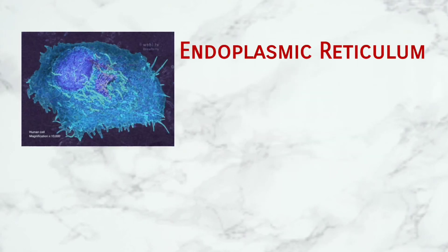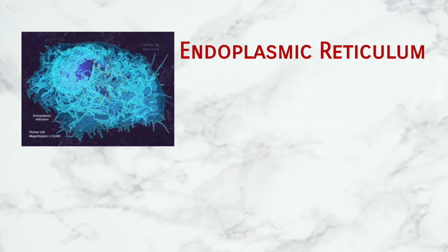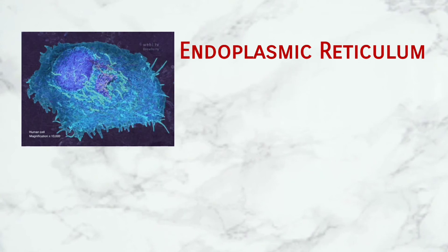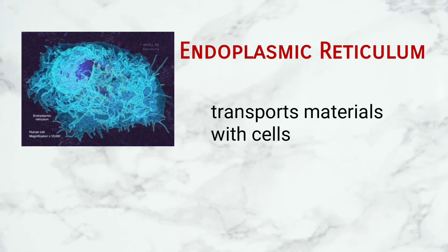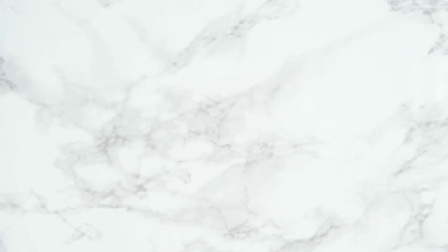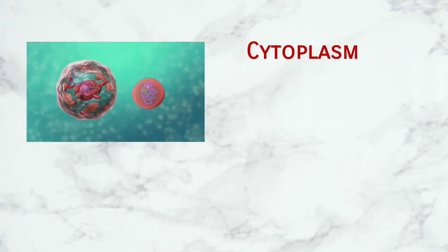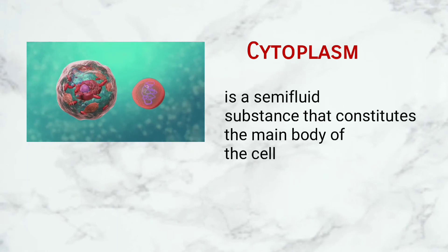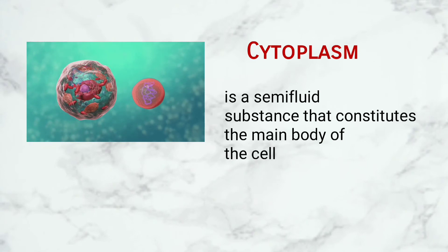Endoplasmic Reticulum: The endoplasmic reticulum transports materials within cells. Cytoplasm: The cytoplasm is a semifluid substance that constitutes the main body of the cell.